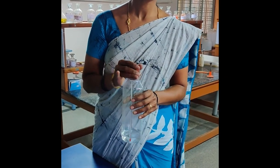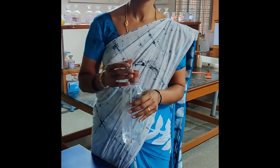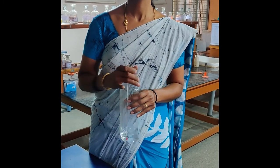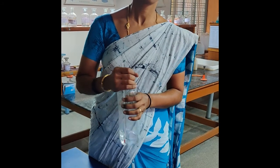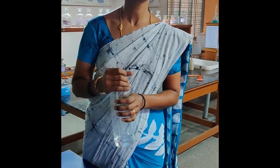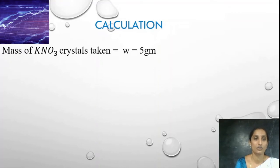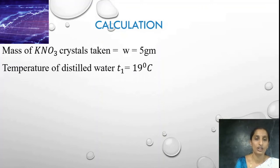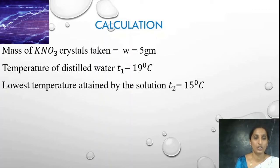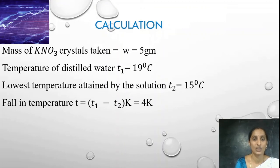Now with the help of T1 and T2 we will go for the calculation. Coming to calculation: mass of potassium nitrate crystals W = 5 grams. Temperature of distilled water T1 = 19 degrees Celsius. Lowest temperature attained by the solution T2 = 15 degrees Celsius. Fall in temperature T = T1 minus T2 = 4 Kelvin.